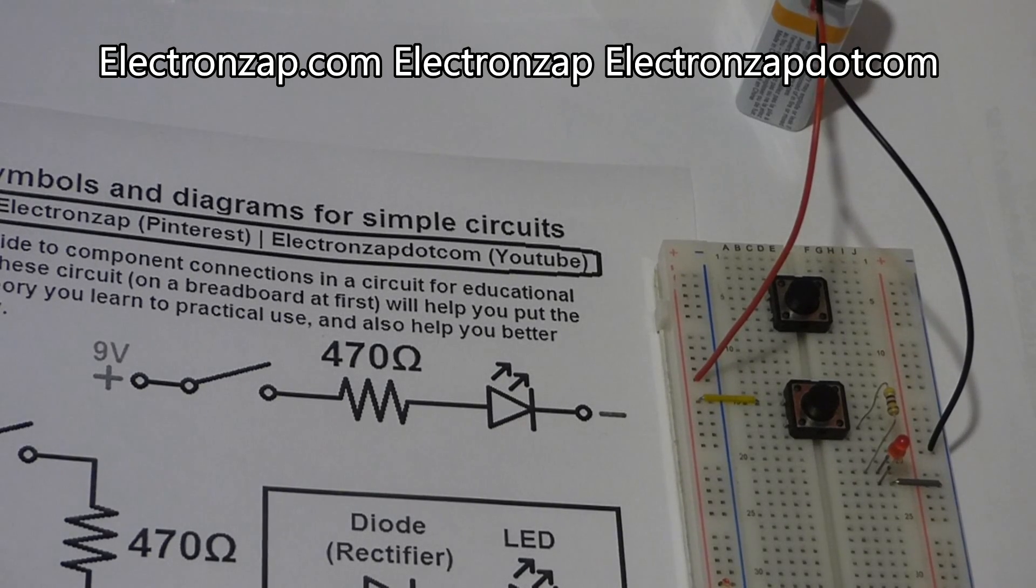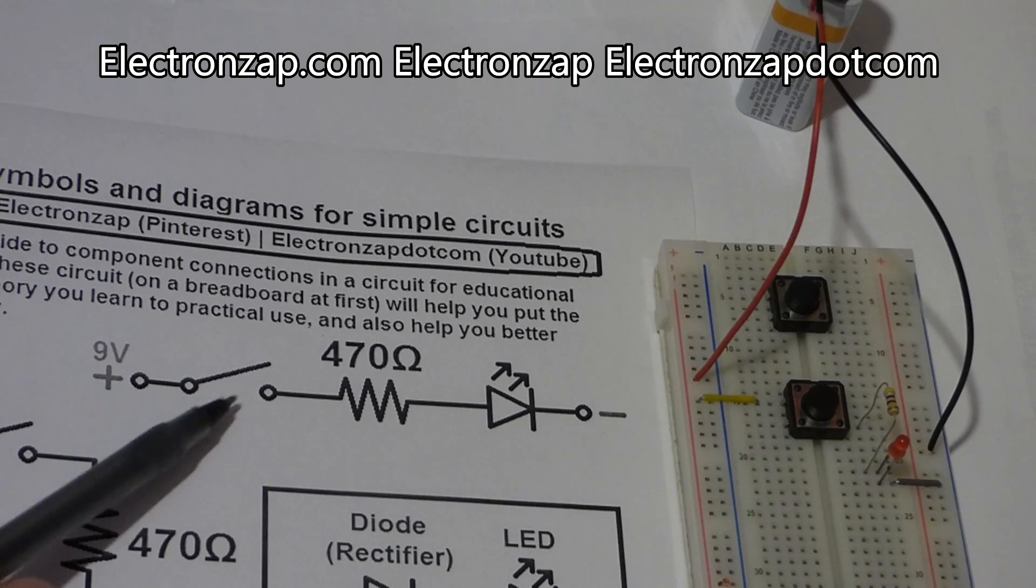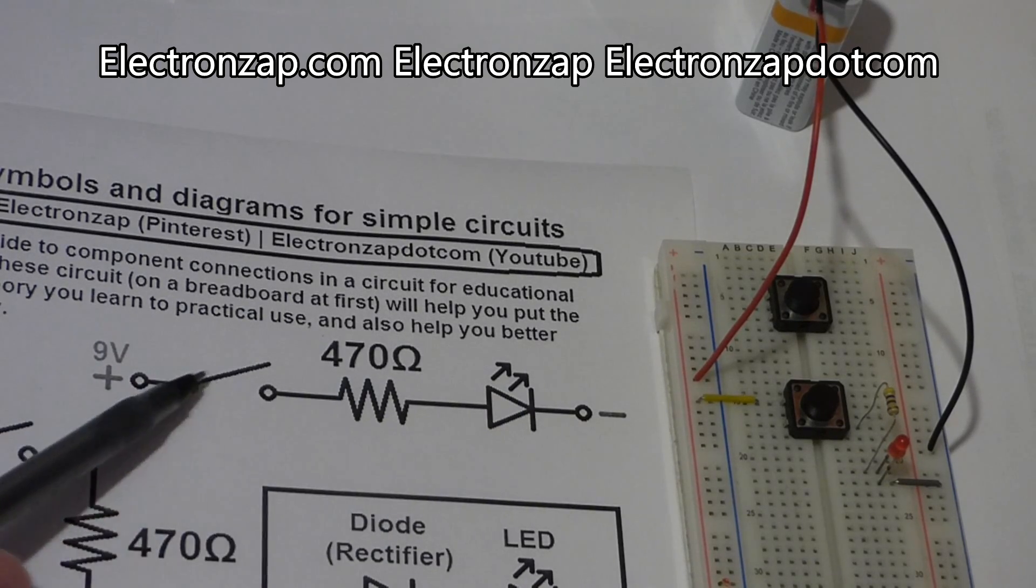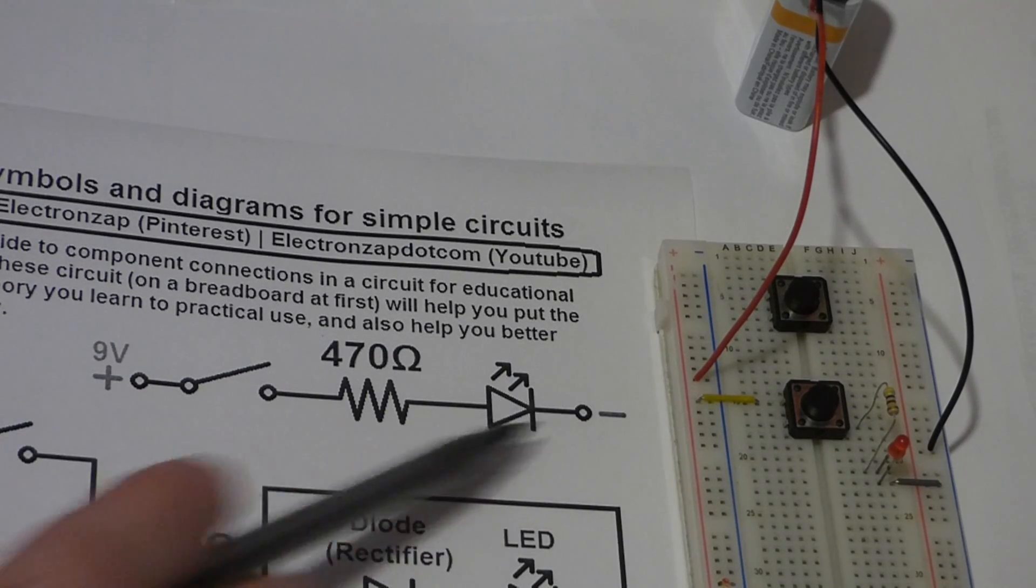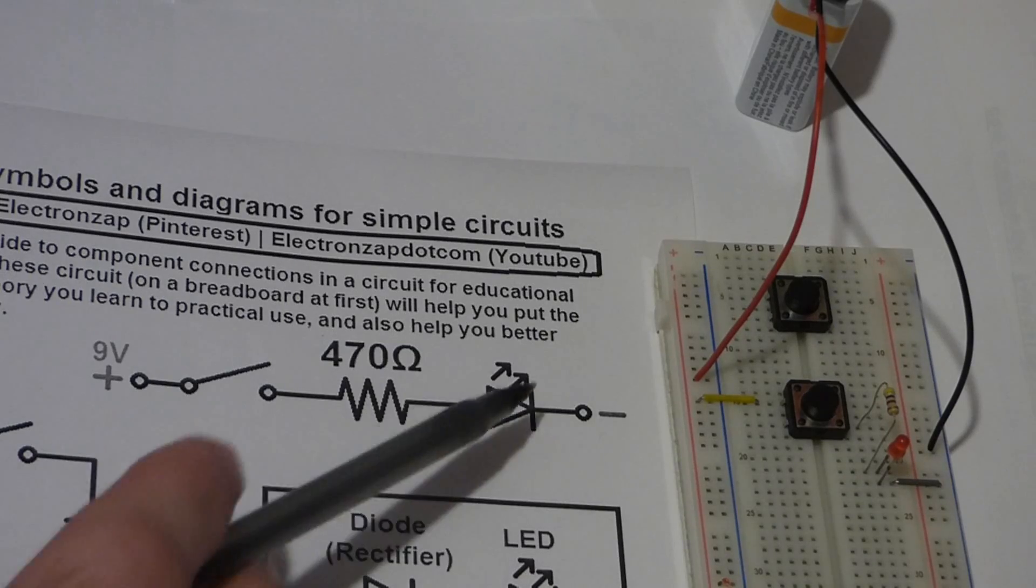So schematics are a diagram which uses symbols to show the components in an electrical circuit and also where the positive side of the power source and the negative side of the power source are.